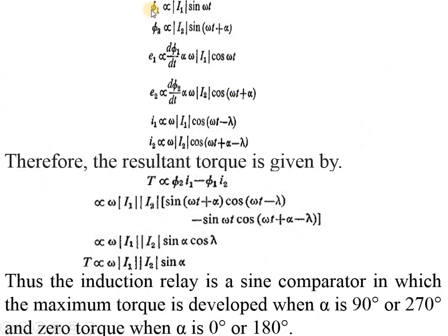We know that φ1 is directly proportional to I1 sin ωt and φ2 is directly proportional to I2 sin(ωt + α).